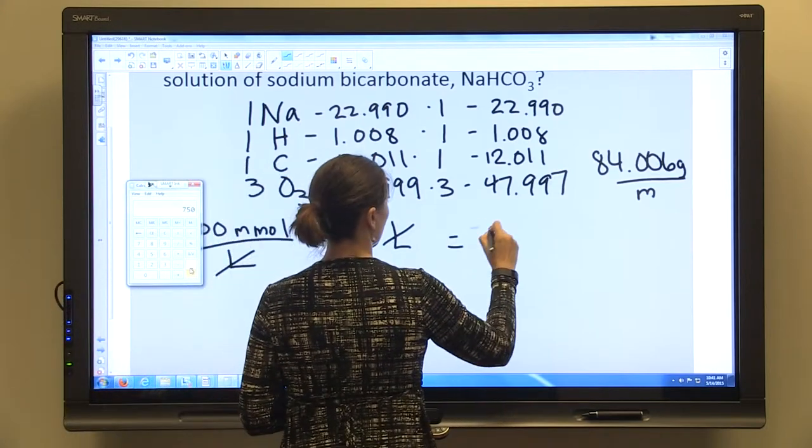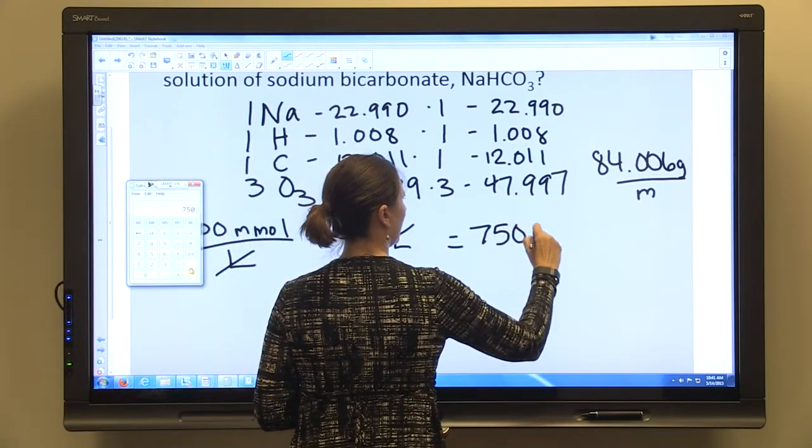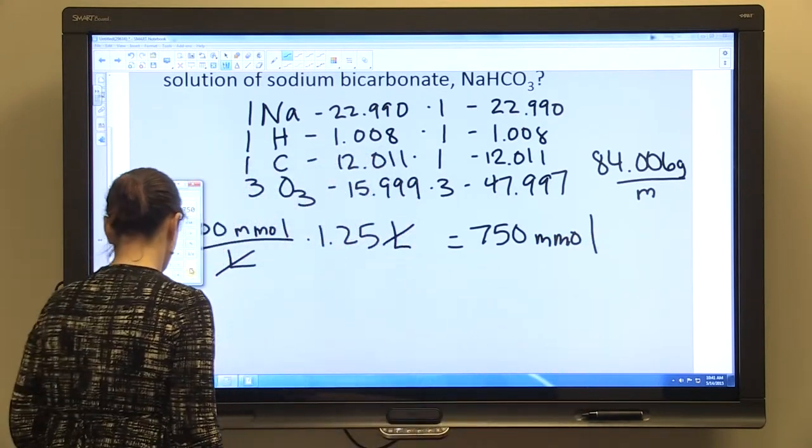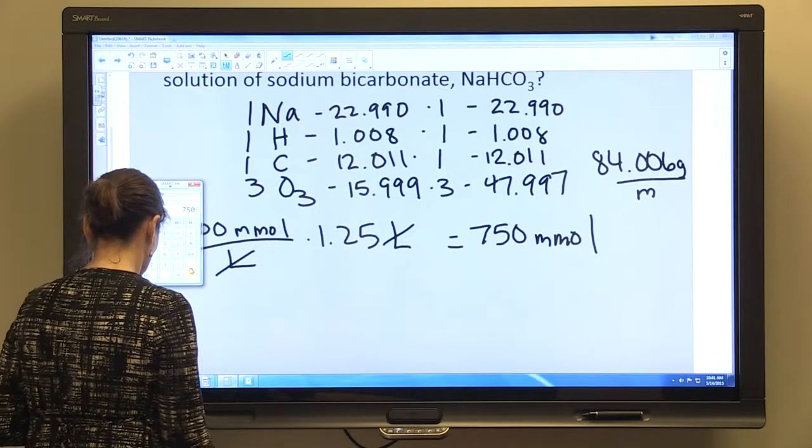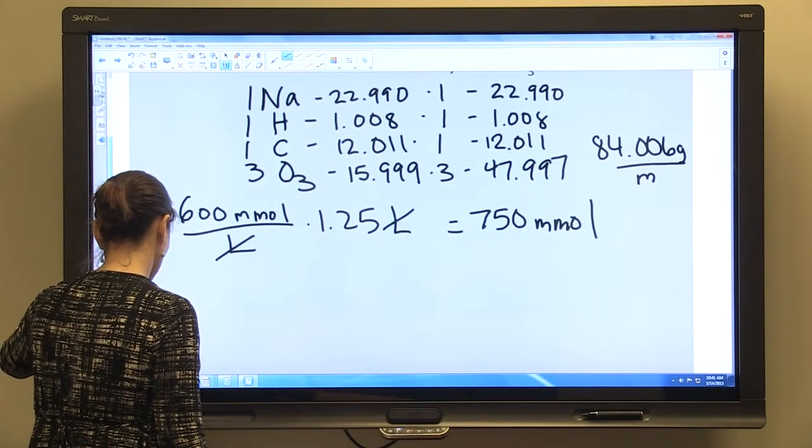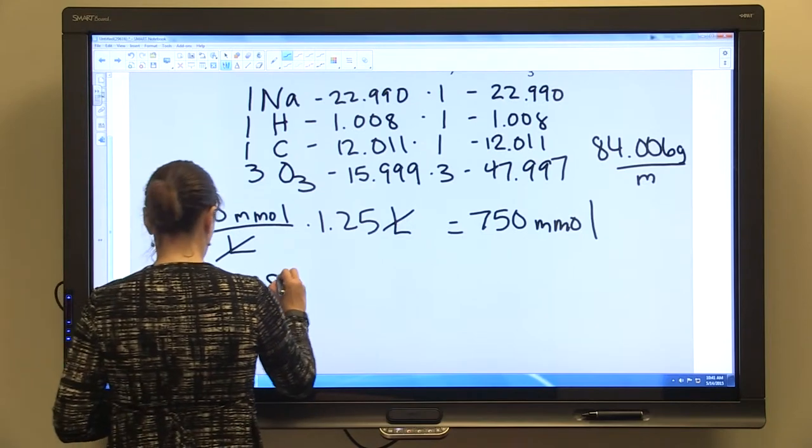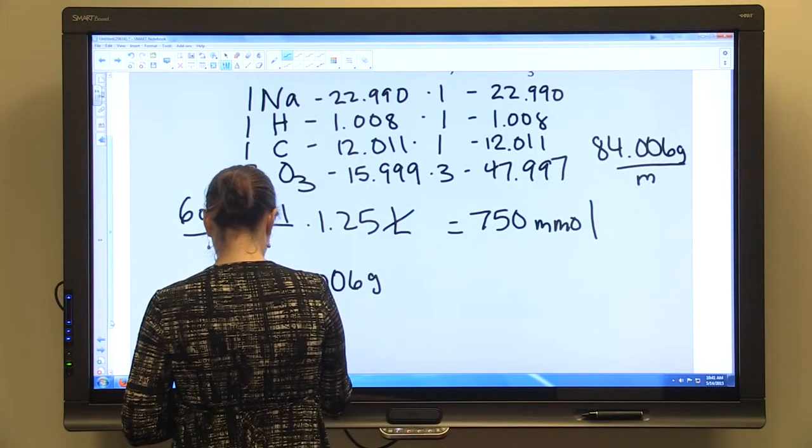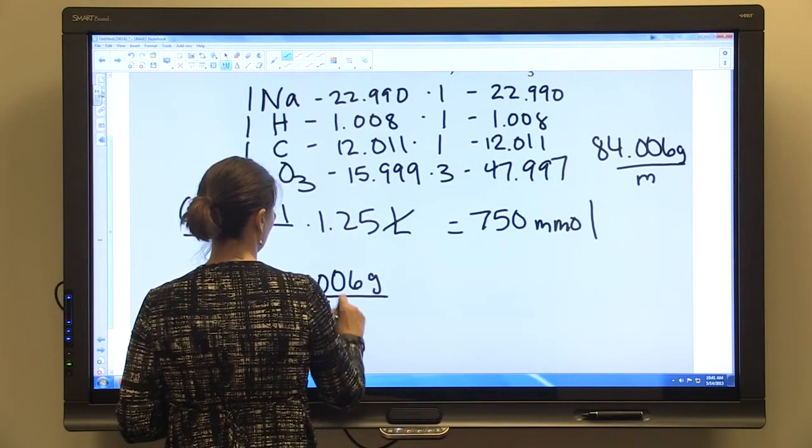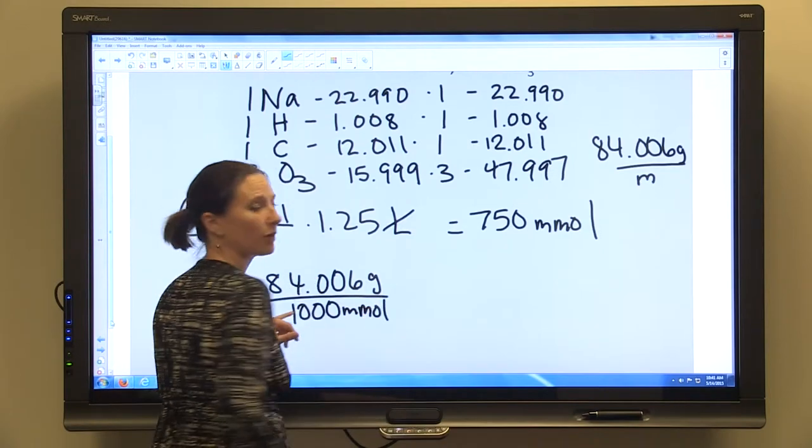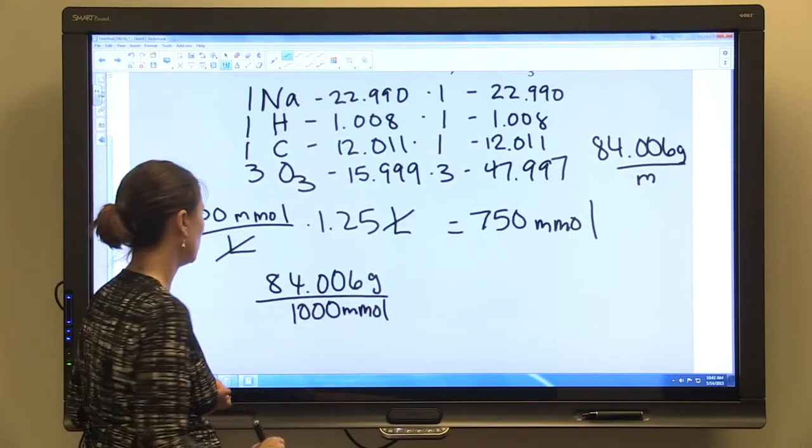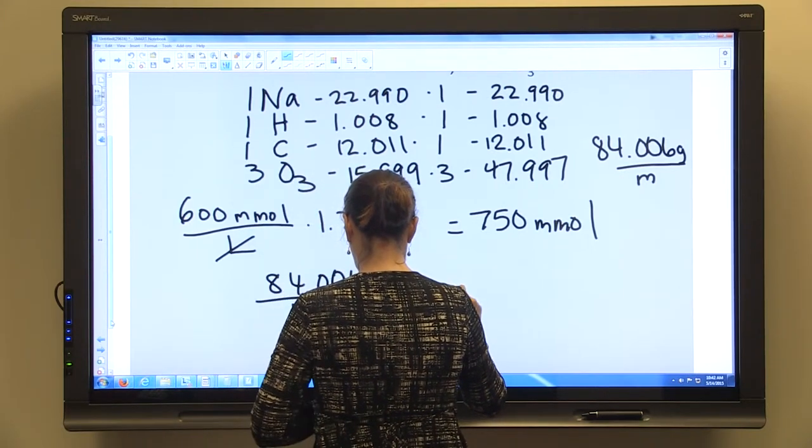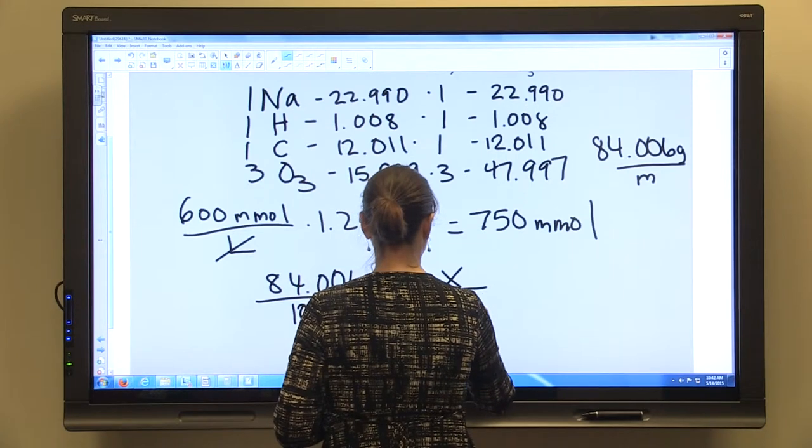We'll know we need 750 millimoles of sodium bicarbonate to make this solution. So we'll know that 84.006 grams per 1000 millimoles—and here we're just substituting 1000 millimoles for one mole—we're going to say we need x grams for 750 millimoles.